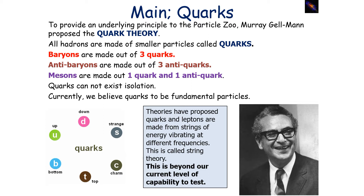Baryons are made out of three quarks. Antibaryons are made out of three anti-quarks. And mesons are made out of one quark, one anti-quark. Quarks cannot exist in isolation — they can't exist separately. Currently, we believe quarks to be fundamental particles. Theories have proposed that quarks and leptons are made out of strings of energy vibrating at different frequencies, which we call string theory, but that's beyond our current level of capability to test.